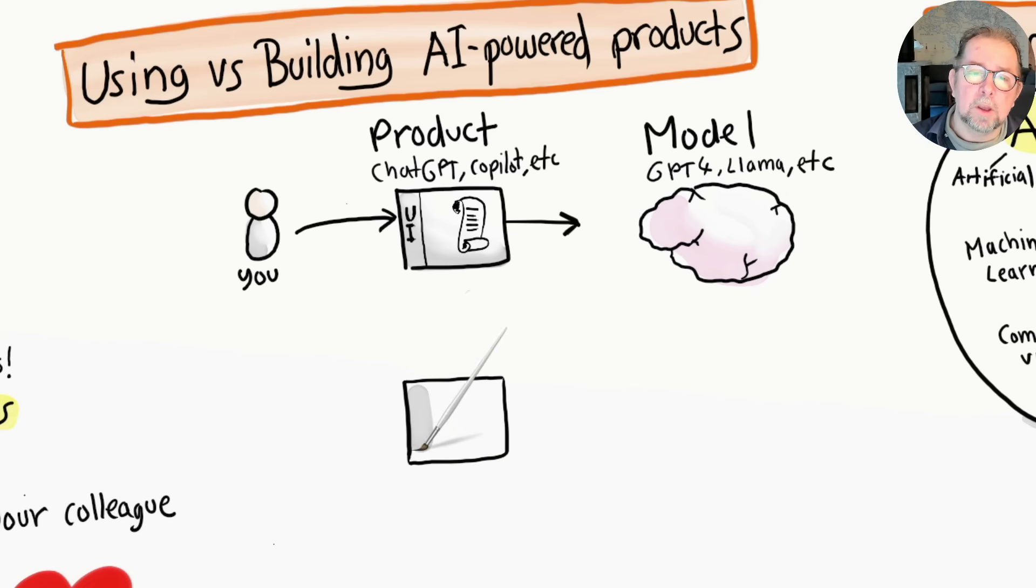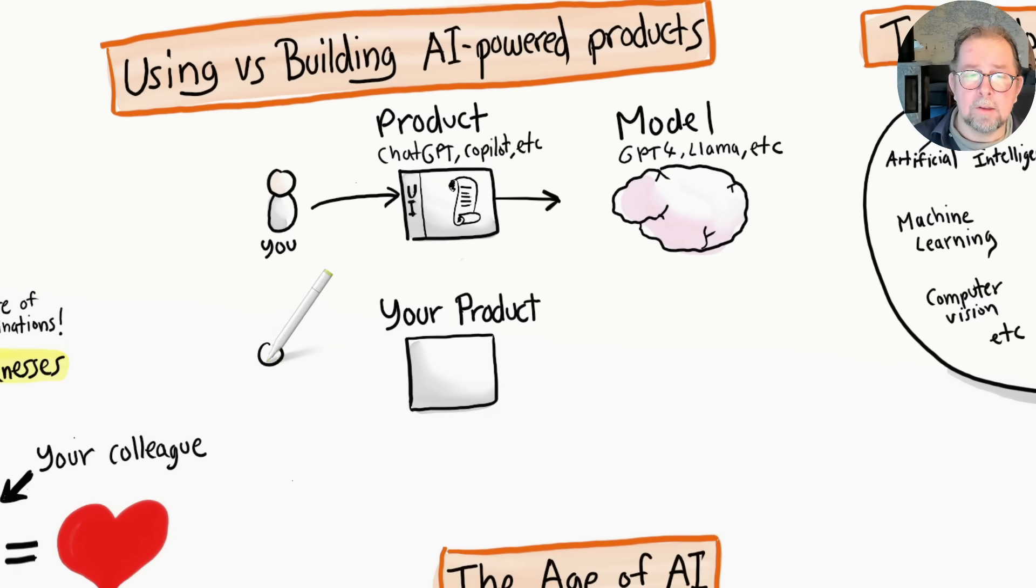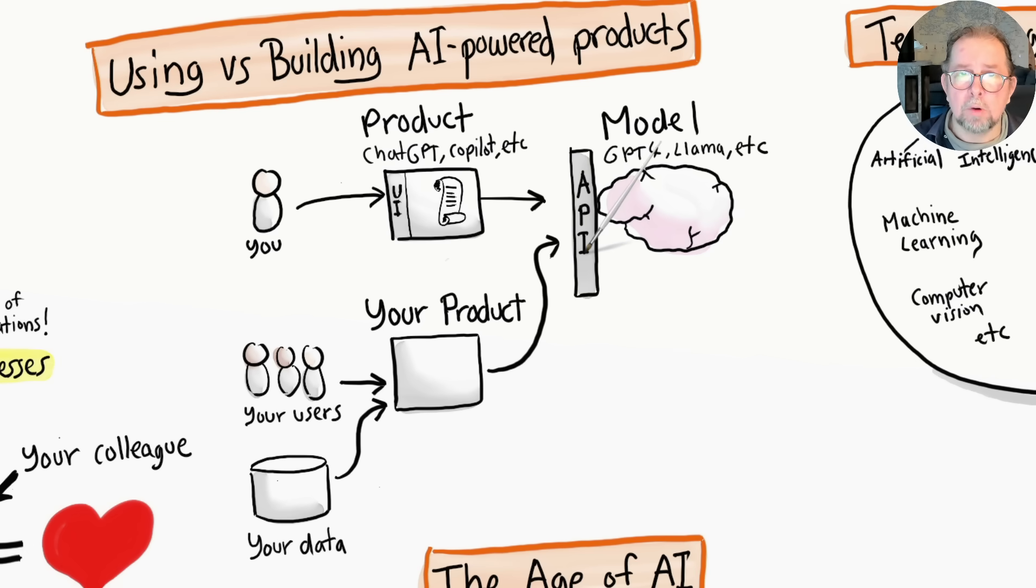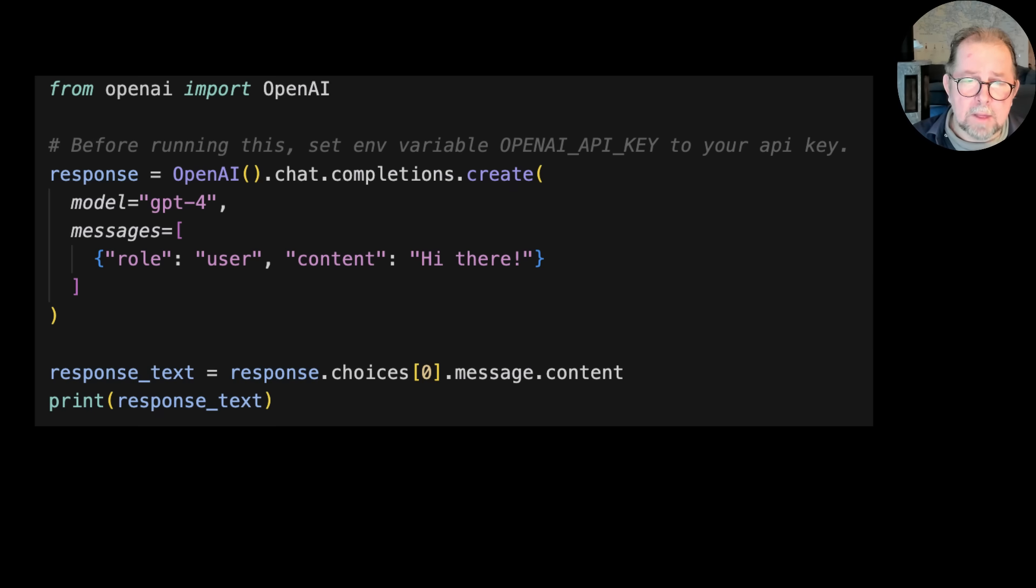As a developer, you can use these models to build your own AI-powered products and features. For example, let's say you have an e-learning site—you could add a chatbot to answer questions about the courses. Or as a recruitment company, you might build AI-powered tools to help evaluate candidates. In both these cases, your users interact with your product, and then your product interacts with the model. This is done via APIs, or application programming interfaces, which allow your code to talk to the model.